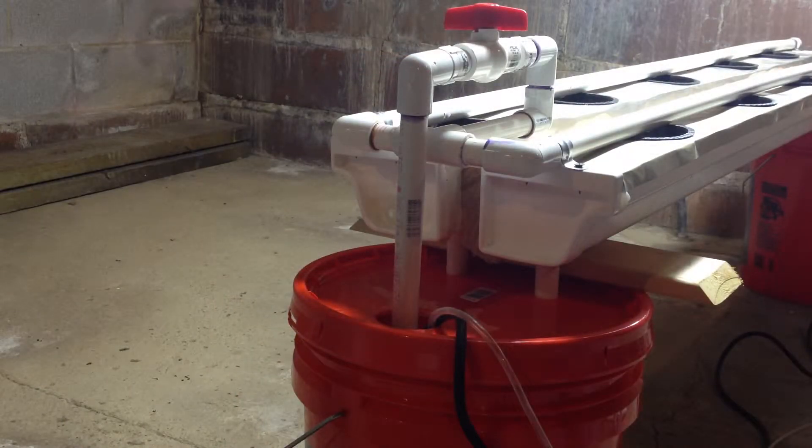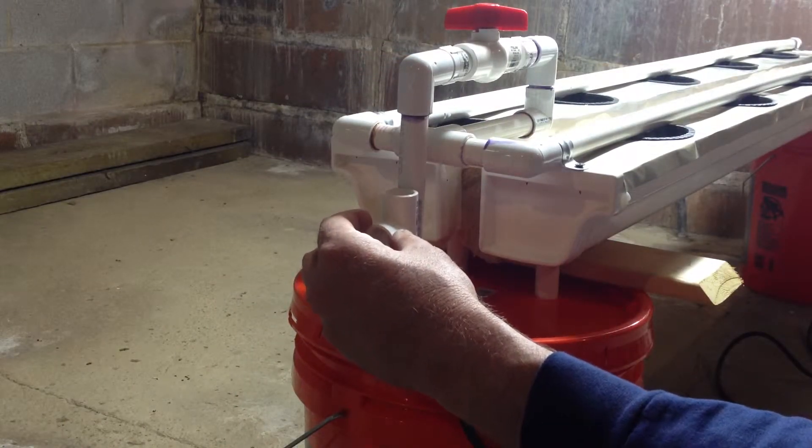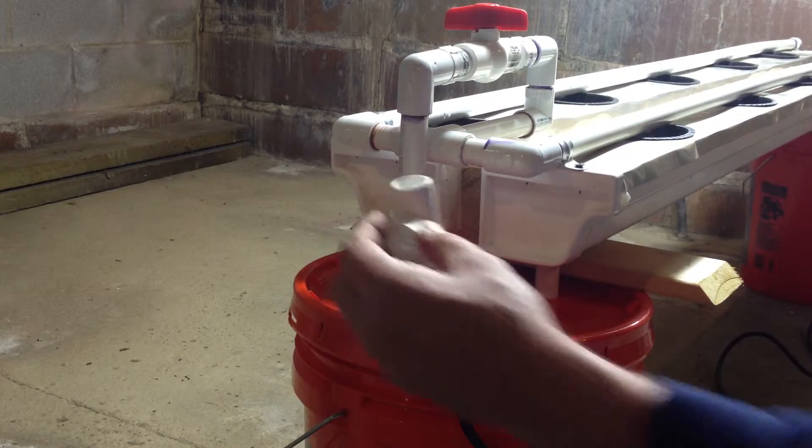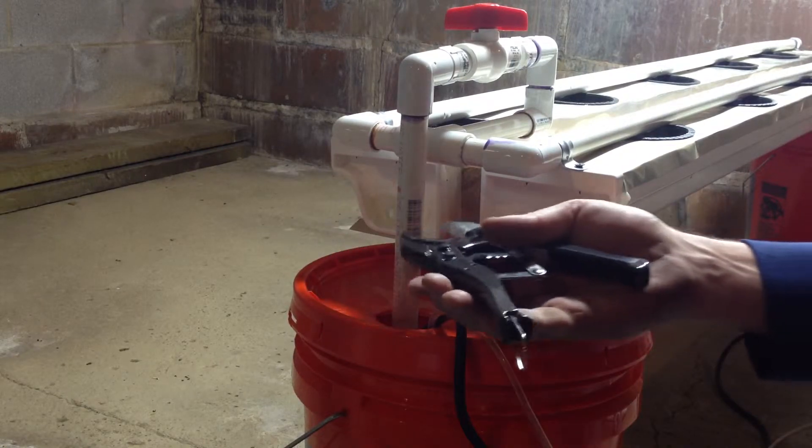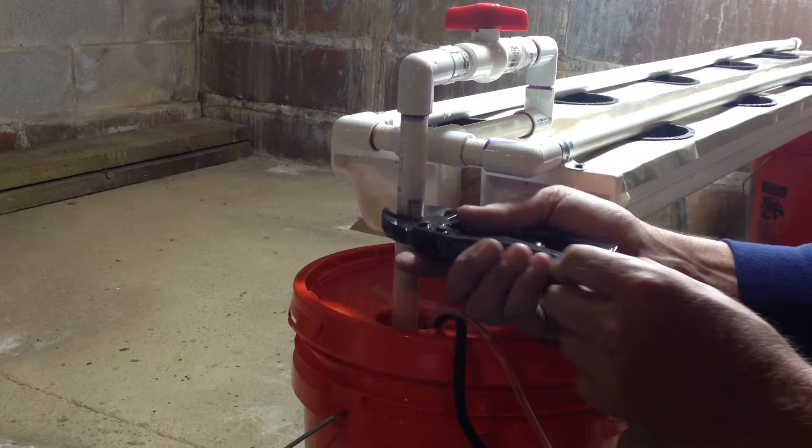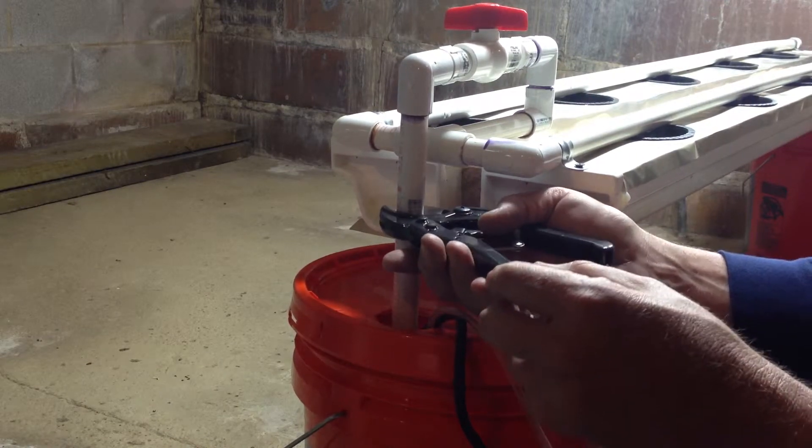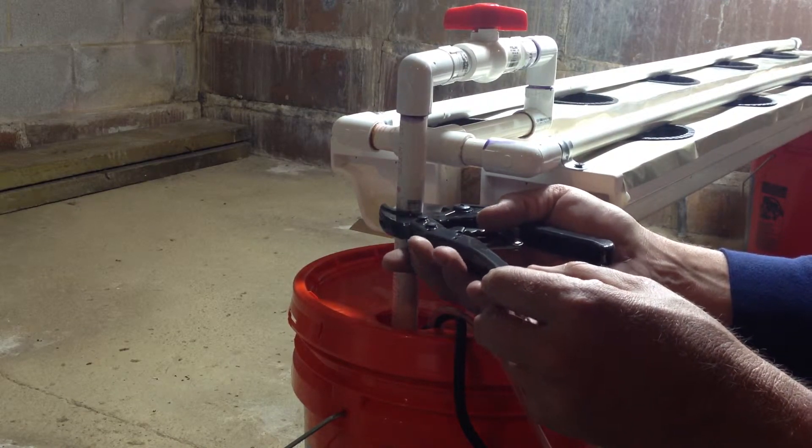First off, you want to figure out exactly where you want to cut the lift tube. I used the T to line up where I wanted to do it, and then I used my PVC pipe cutter to make the first cut.